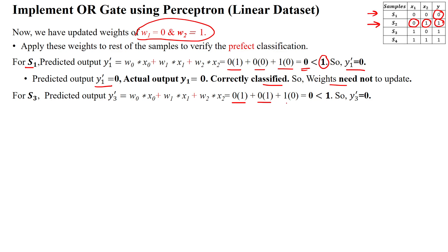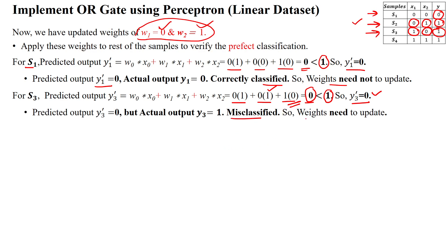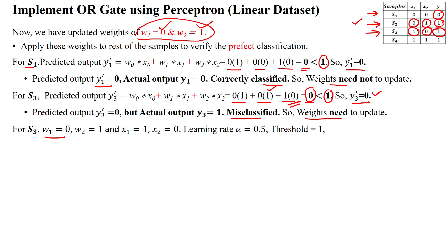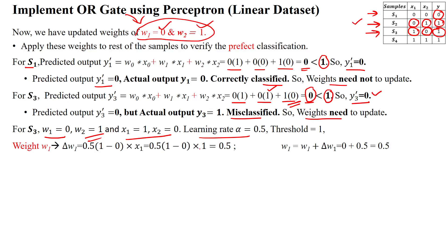For sample 2 (already done), and then sample 3 (x1=1, x2=0, actual output=1): substituting w1=0, x1=1, w2=1, x2=0 gives 0·1 + 1·0 = 0, which is less than 1. So the predicted output is 0, but the actual output is 1 — misclassified. We must update weights again. Old weights: w1=0, w2=1; inputs for sample 3: x1=1, x2=0; learning rate=0.5.